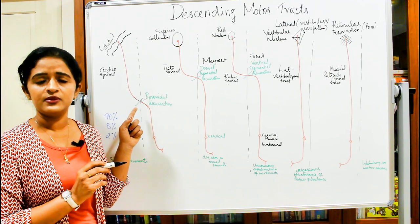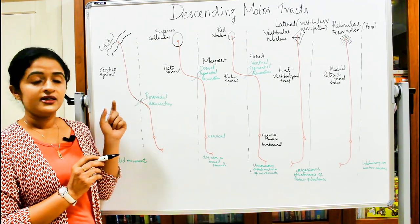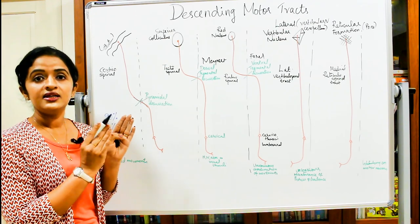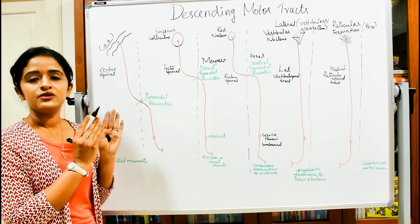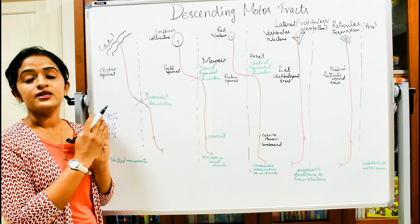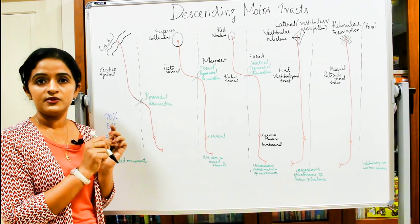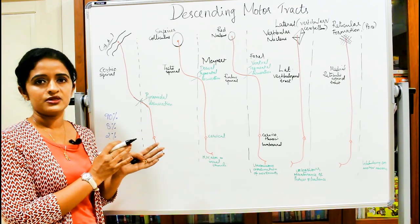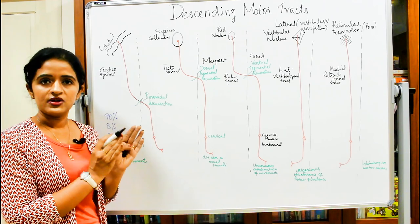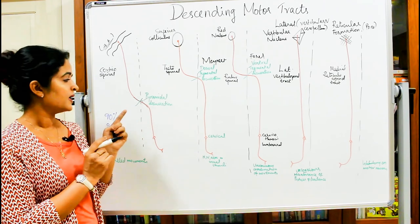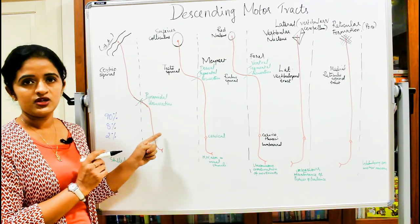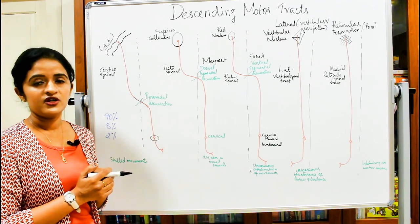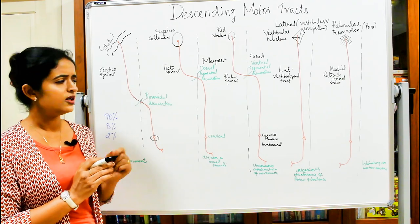These fibers are also known as pyramidal tract fibers because the pyramid contains mainly the corticospinal fibers. All other motor fibers not passing through the pyramid of the medulla are called extrapyramidal fibers. At the pyramid, the fibers cross to the opposite side and terminate in the anterior horn - the ventral horn - of the spinal cord.